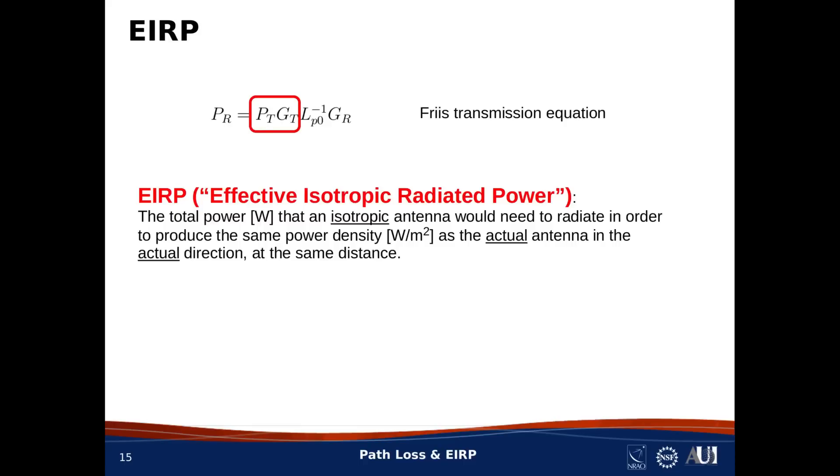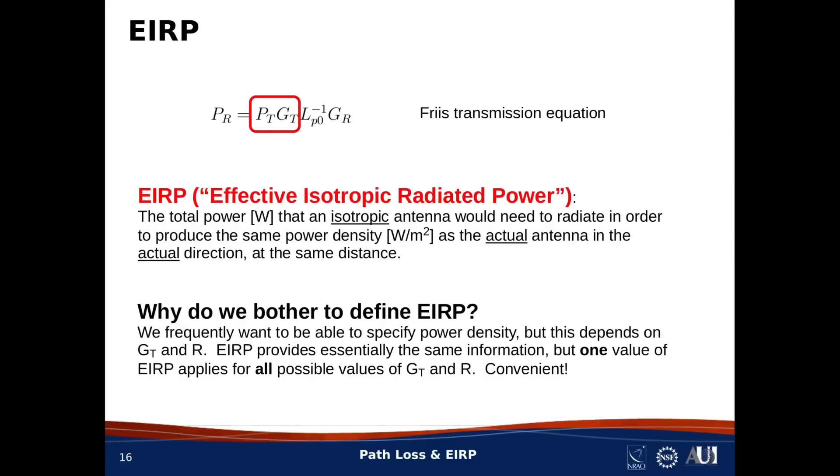Now, this may seem like a strange thing to give a name to, so why bother doing this? Well, here's why. In radio link engineering and in spectrum management, we frequently want to be able to specify power density. The problem is that power density depends on both G sub T and R. And that's awkward because then we would also have to specify these things. However, if we instead specify EIRP, then this is essentially the same information, but it's independent of G sub T and R. That means just one value needs to be specified, as opposed to a value for every possible combination of transmit gain and distance. This is convenient.